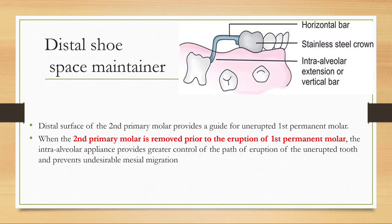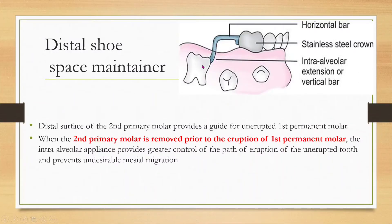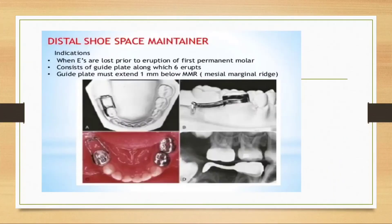The next space maintainer category is the distal shoe space maintainer, a very commonly asked topic. From the picture, it is easy to understand: there is a stainless steel crown on the abutment tooth; from the distal side there is a bar pointing mesially toward the erupting permanent first molar to guide its eruption pathway. The indication is when the second deciduous molar is lost prior to the eruption of the first permanent molar.